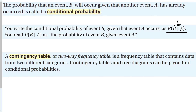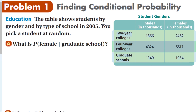We read it as probability of event B given event A. One way we can find conditional probabilities is using something called a contingency table, or a two-way frequency table, which is a frequency table that contains data from two different categories. Contingency tables and tree diagrams can help find conditional probabilities.